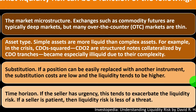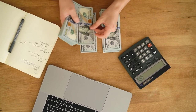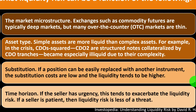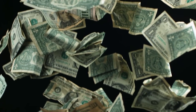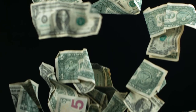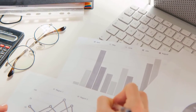Time horizon: if the seller has urgency, this tends to exacerbate the liquidity risk. If we're in a situation where we need cash flow, that can have a negative impact — we want to buy and sell on our own terms rather than feeling panicked because something is coming due. If a seller is patient, then liquidity risk is less of a threat. That comes back to having a diversified portfolio with enough cash flow, including an emergency fund or access to credit lines if necessary. Both types of liquidity risk share a common feature: they both involve the fact that there's not enough time.